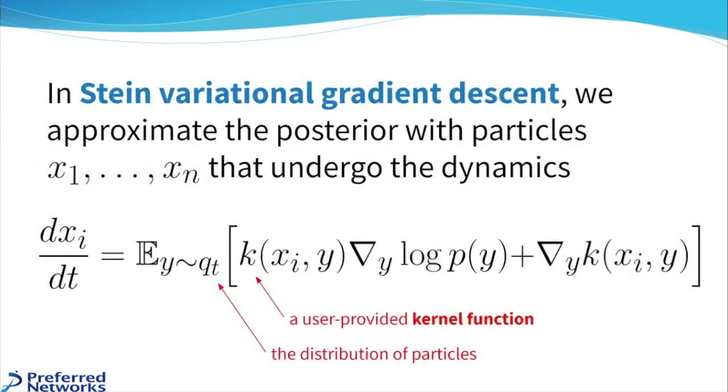To see this, let's first look at SVGD. In SVGD, we approximate the posterior with particles, x1 through xn, and they undergo the dynamics described by this ODE. And the key is this kernel function that describes how one particle affects another particle's dynamics.